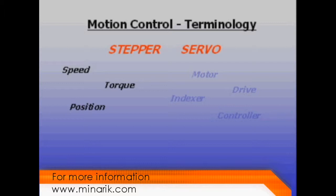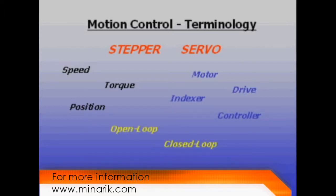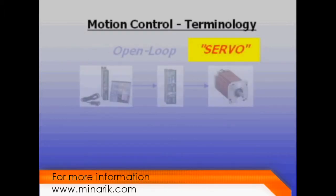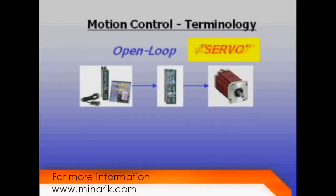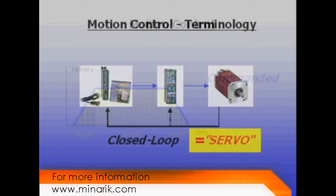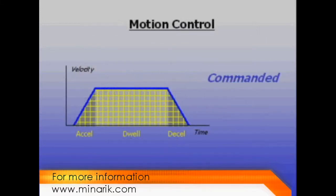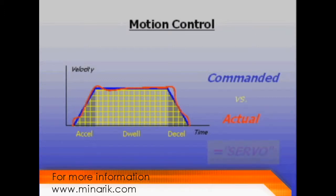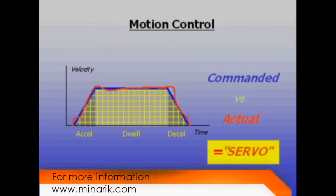In motion control, correct terminology is key to understanding performance. The term servo is commonly used and often misused. Servo simply means closed loop or with feedback. Technically, any closed loop system which compares actual to commanded performance can be called a servo system.